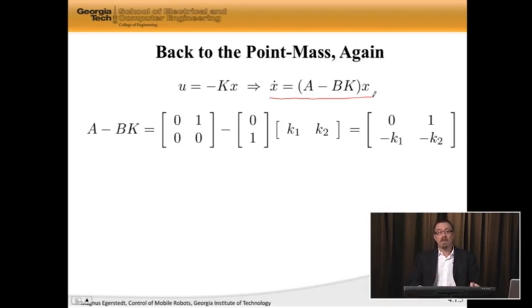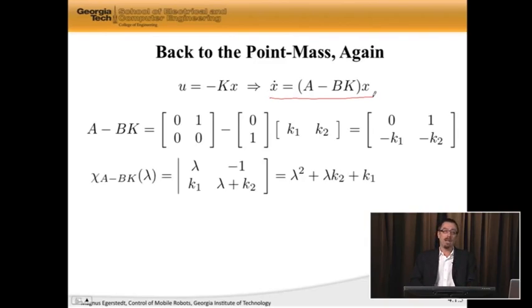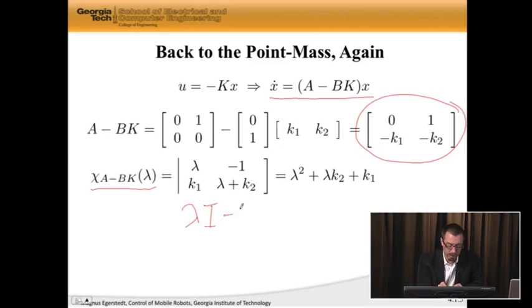Now, let's compute the eigenvalues, or at least the coefficients in this thing called the characteristic equation. So chi A minus BK lambda, it's this determinant. It's the determinant of this matrix, or the negative of that matrix, plus lambda times the identity. So what I have here is lambda I minus A minus BK.